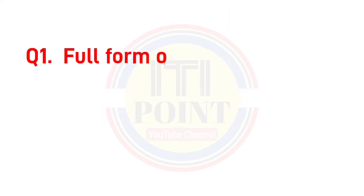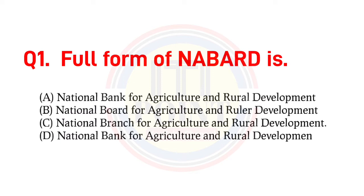Full form of NABARD is: A) National Bank for Agriculture and Rural Development, B) National Board for Agriculture and Rural Development, C) National Branch for Agriculture and Rural Development, D) National Bank for Agriculture and Rural Development. The correct answer is option A: National Bank for Agriculture and Rural Development.